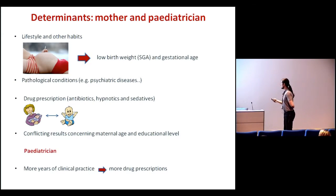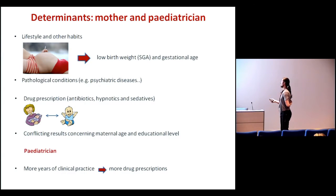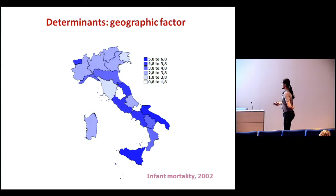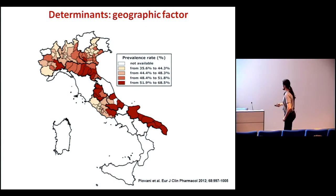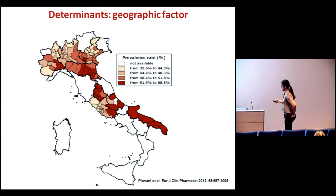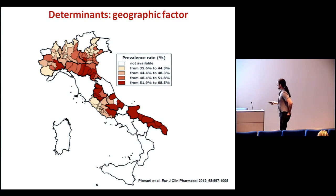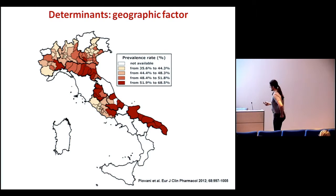If we look at the pediatrician, some studies have shown that more years of clinical practice are associated with more drug prescriptions. There is also the geographic factor — this is the infant mortality in Italy, and we can clearly see a heterogeneity. Our laboratory has published in recent years many studies on drug utilization and the geographic factors of drug prescription. This is just an example from seven regions showing the prevalence rate of antibiotics in the pediatric population. We demonstrated that there is an inverse relationship and association with latitude and human development index.